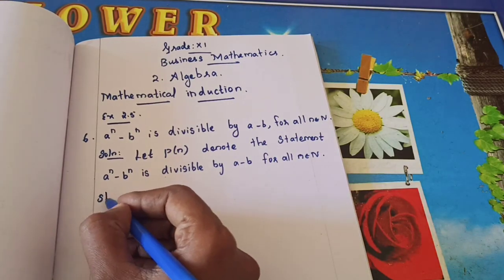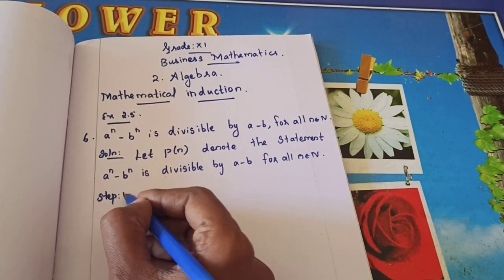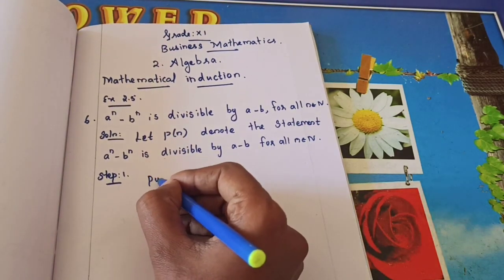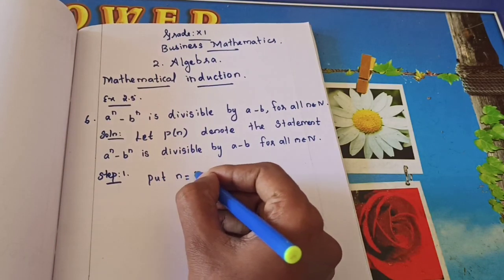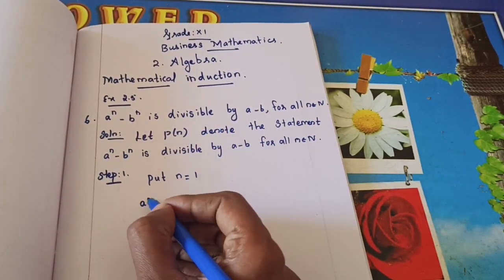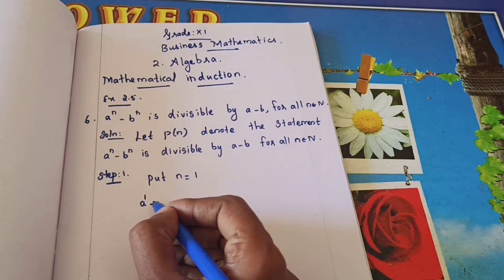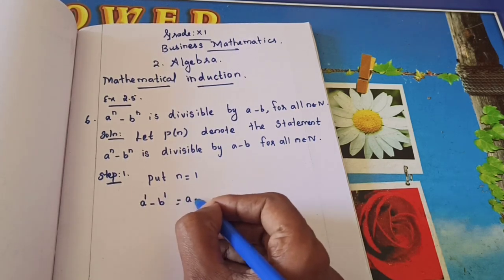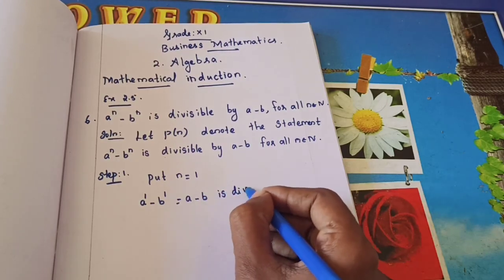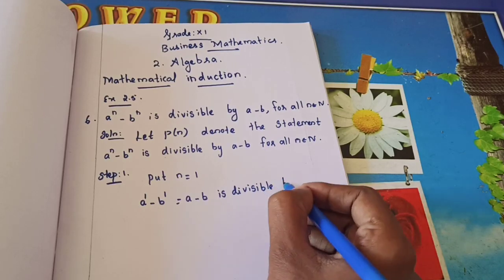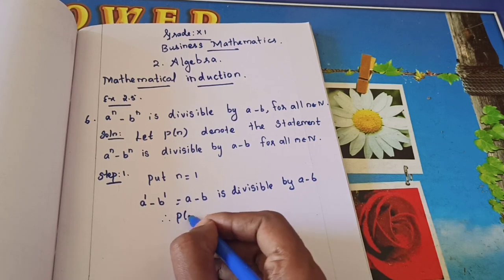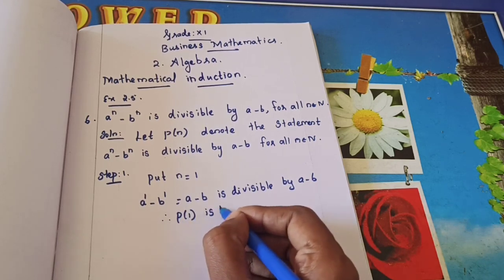Step 1: Put n equal to 1. Substituting n = 1, we get a power 1 minus b power 1, which equals a minus b. Whether it is divisible by (a minus b)? Yes. So p(1) is true.